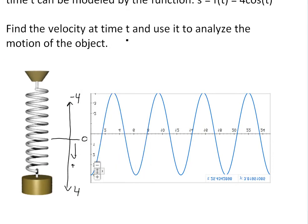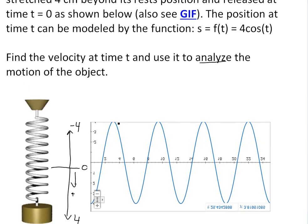Now if we want to analyze the motion of the object, if we take the derivative, let's just put this first as s = 4cos(t).